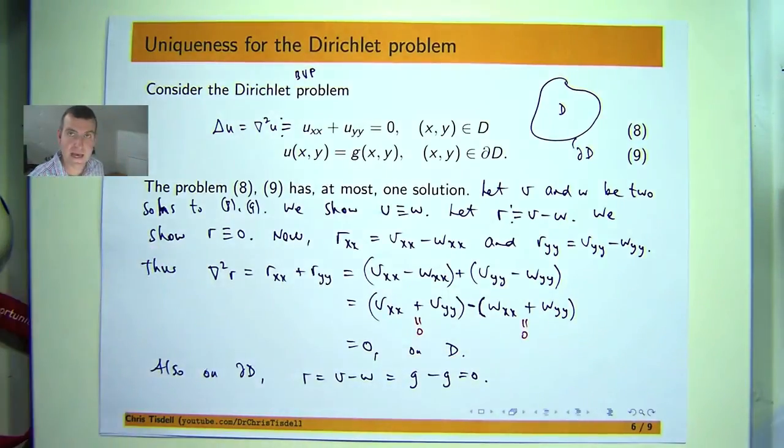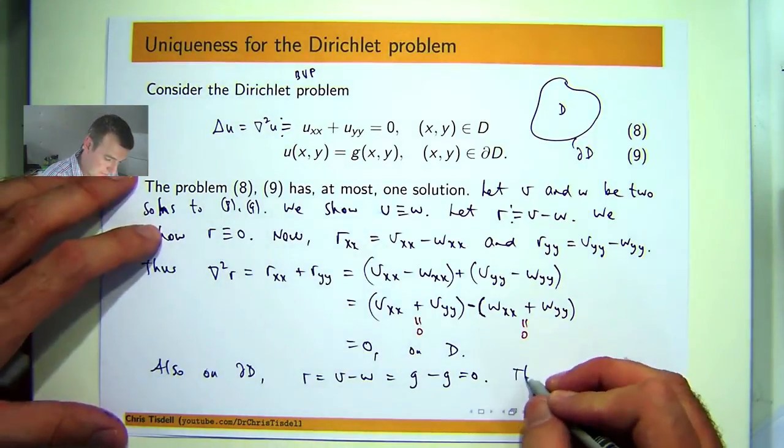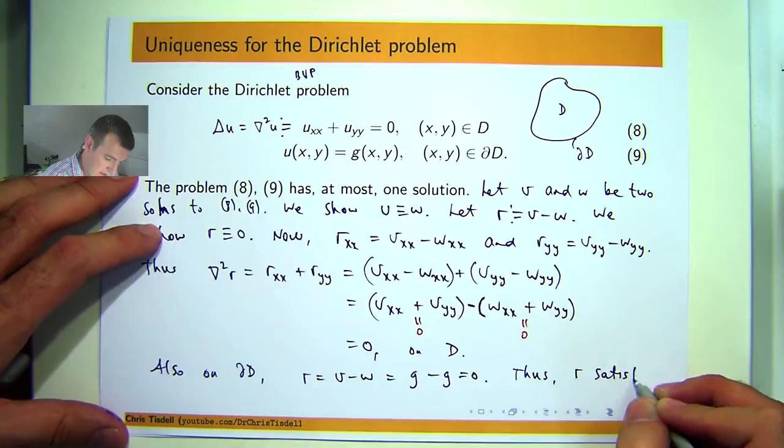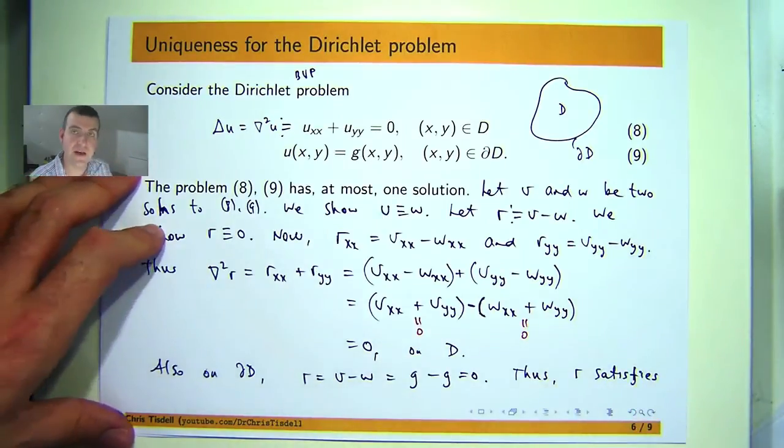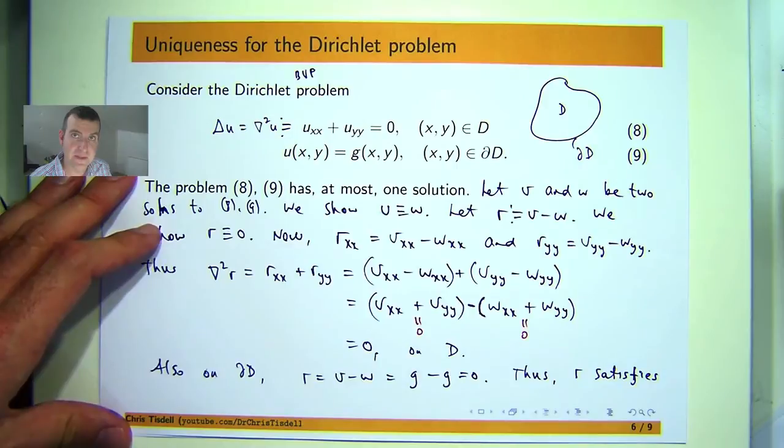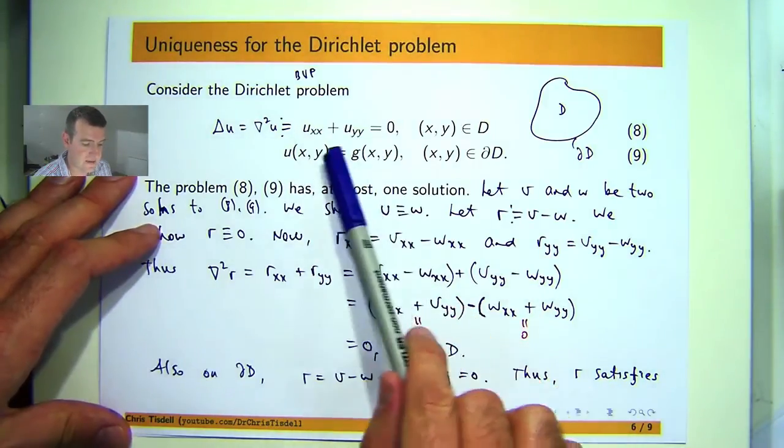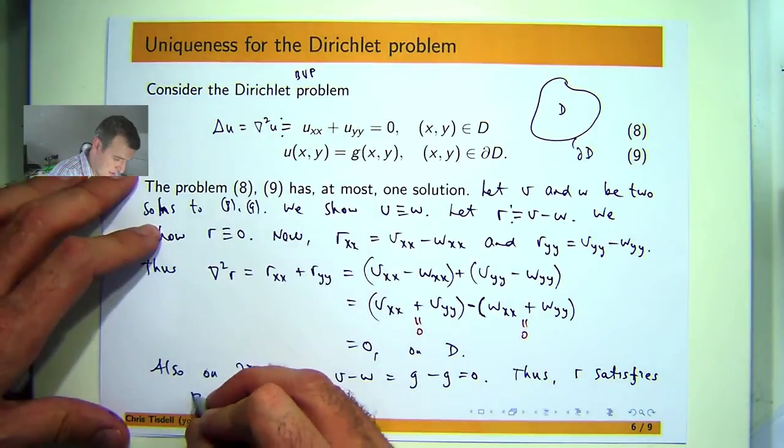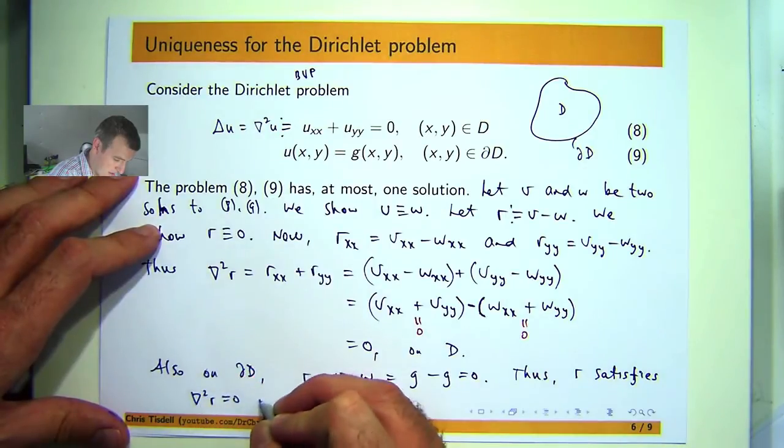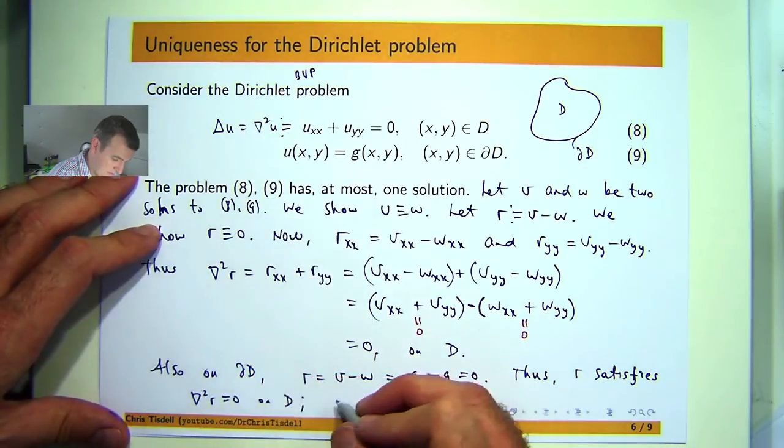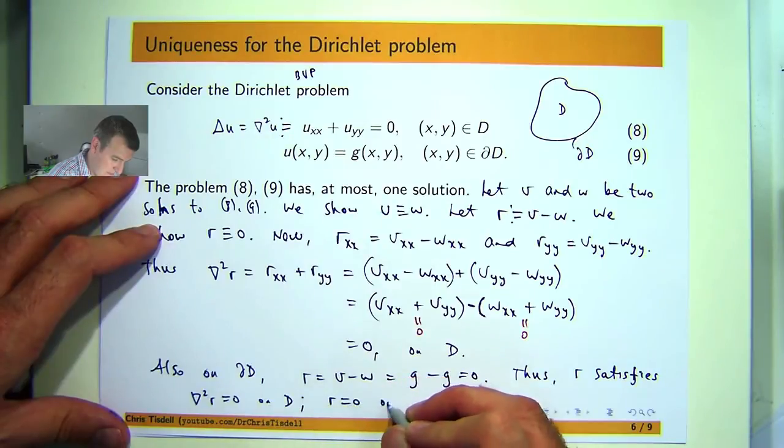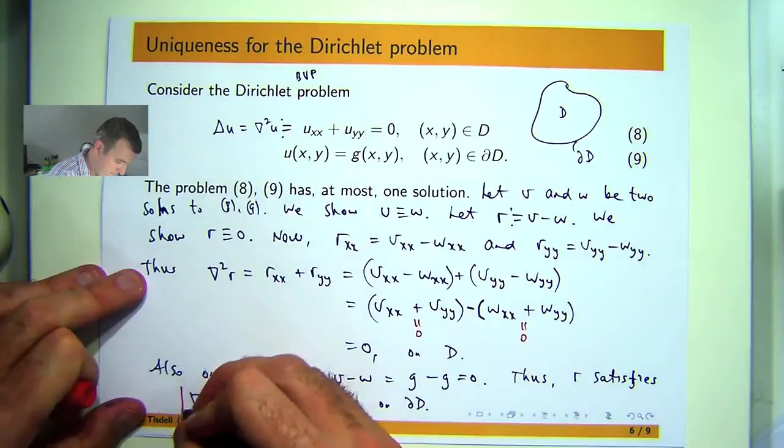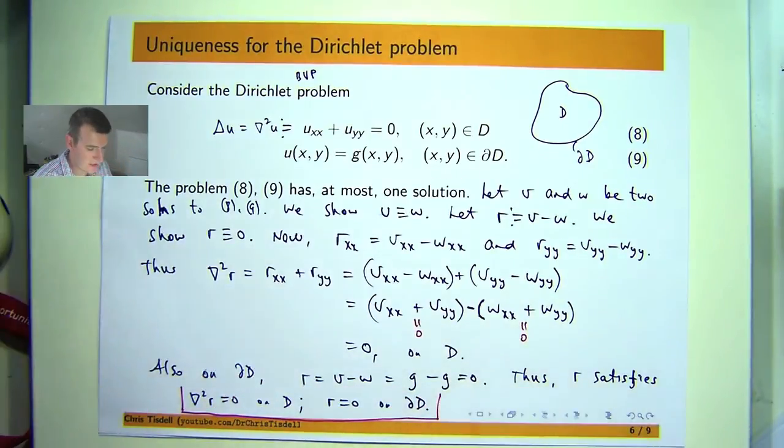Well what about on the boundary? Well again if we restrict x and y to the boundary of D then V is g there and W is also g there. So V minus W will be g minus g so it'll be 0. So now we have a boundary value problem for R. Now the differential equation is the same but the boundary conditions are homogeneous.